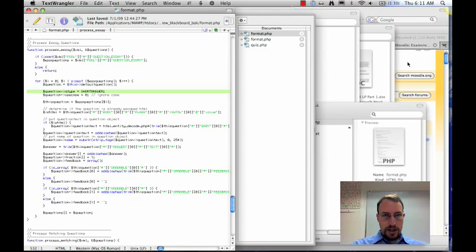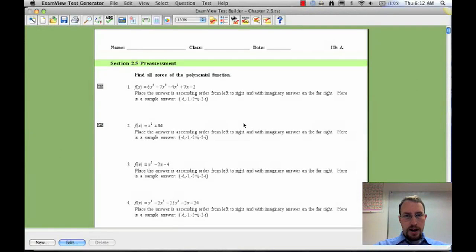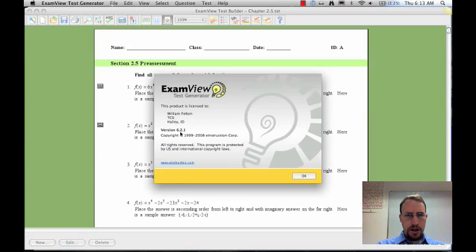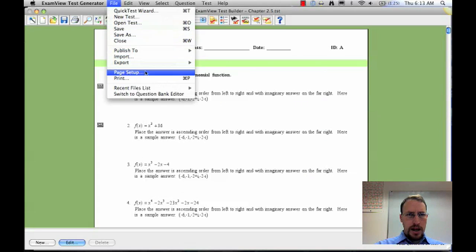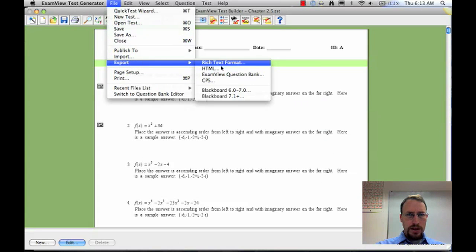Once it's working, once you have all that done, basically the installation is complete. I'm now in my exam view program, and I'm going to do an export of this on version 6.2.1. I am going to export this as not Blackboard 7.1, but it's 6.0 to 7.0.